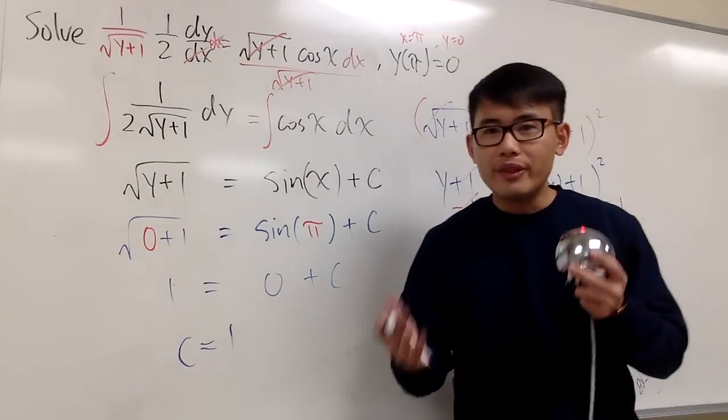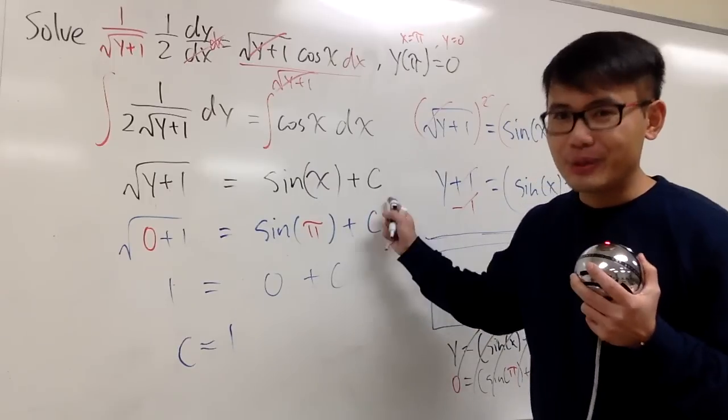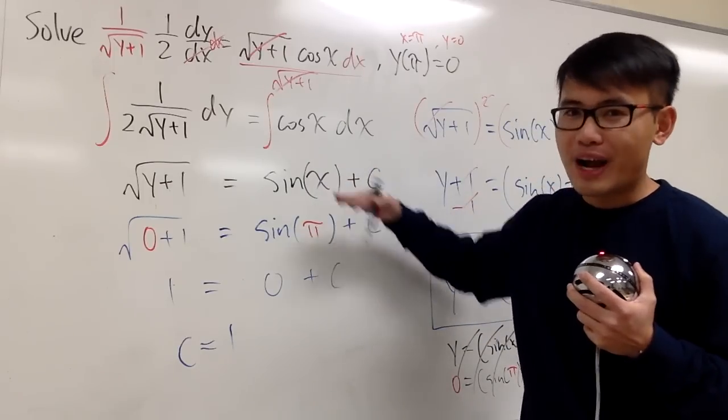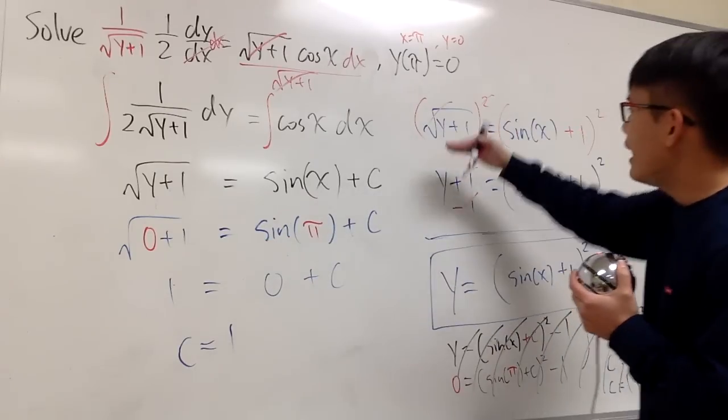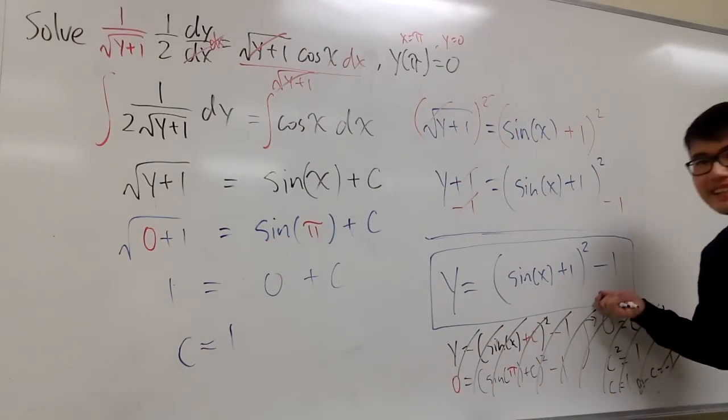A quick summary is that, whenever you can solve for c, easily, you go ahead and do it. And that's why I did it right here. I solve for the c right away, and then I isolate the y after that. And this is it.